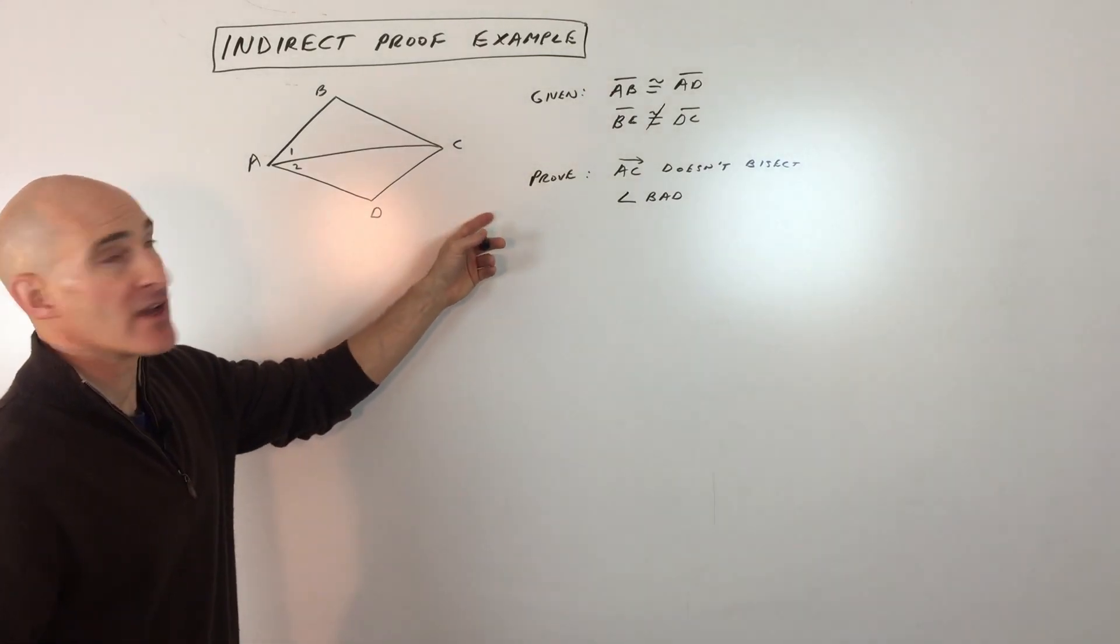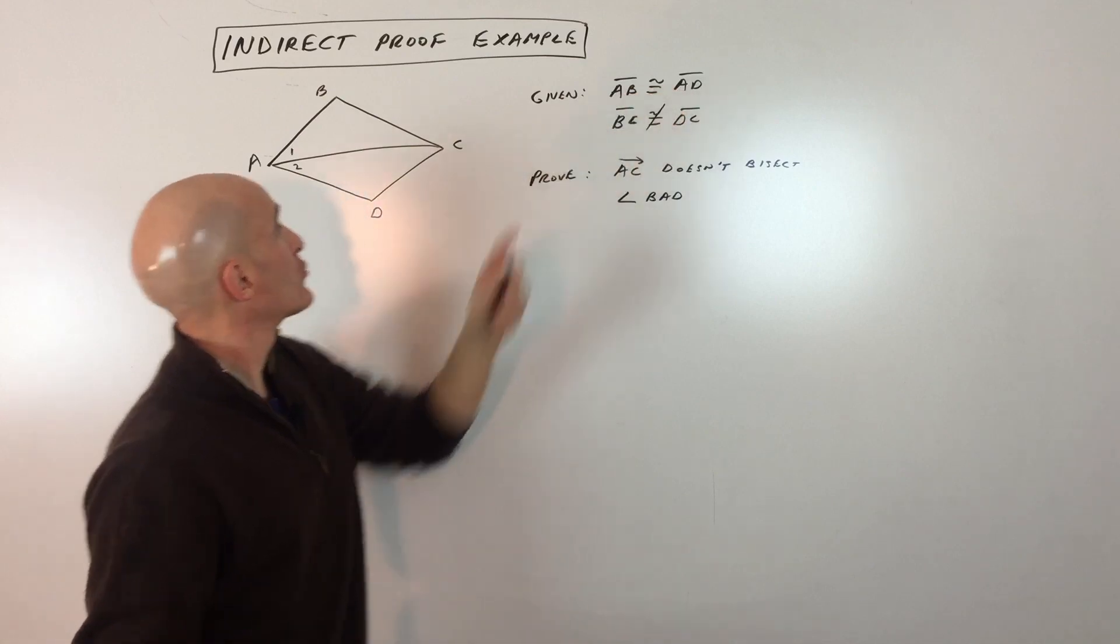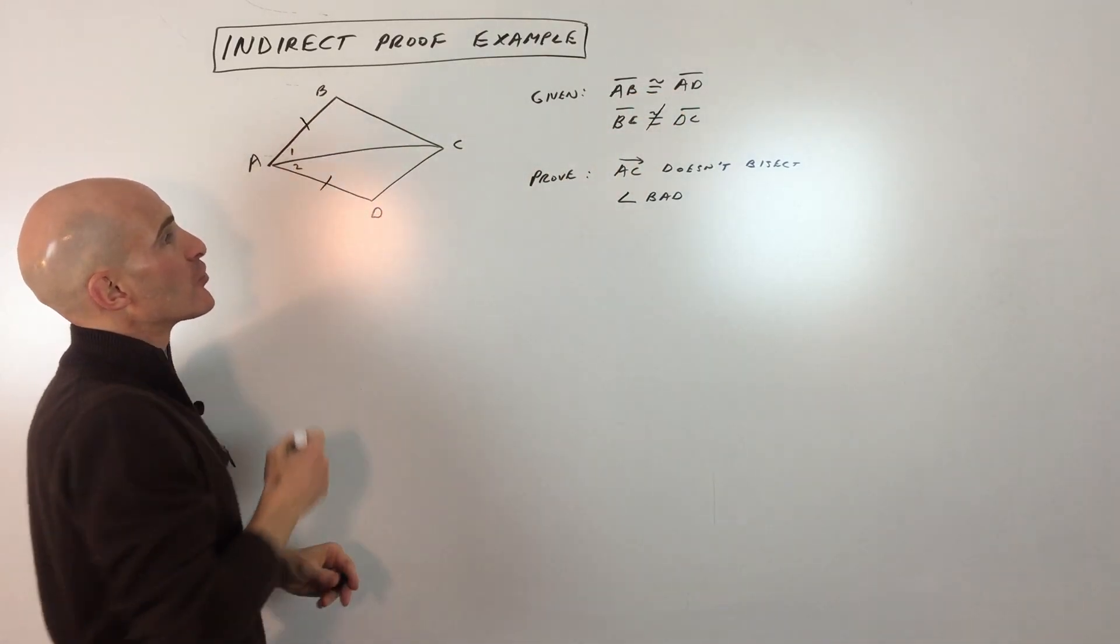We want to take a look at what they're giving us. Given this diagram, AB is congruent to AD. Let's mark that on the diagram. Those are congruent.